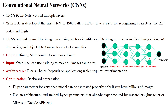Welcome to the Convolutional Neural Networks Architecture session. Convolutional Neural Networks, called ConvNets, have multiple hidden layers. Yann LeCun developed the first Convolutional Neural Network in 1988, called LeNet, for recognizing characters like zip codes and digits in image format. CNNs are widely used for processing images, such as identifying patterns from satellite images, medical images, forecasting time series data, object detection, and detecting anomalies or tumors from scanned images.